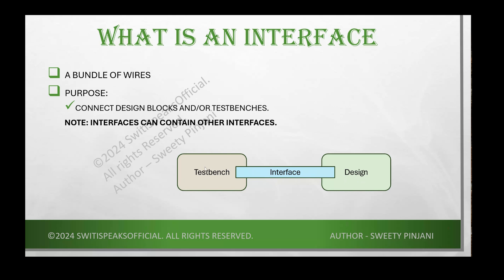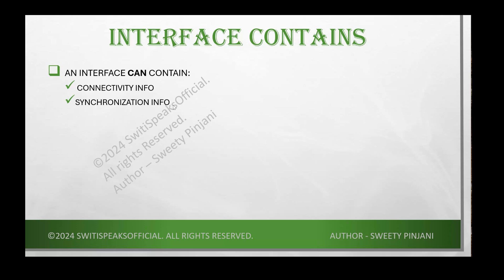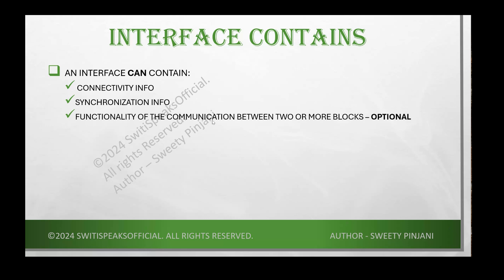You will pass the inputs from the test bench to the design, then read the outputs from the design into your test bench and analyze them. An interface can contain connectivity information, synchronization information — how your signals are getting synchronized with respect to the clock — which means it can also contain clocking blocks. It can also contain the functionality of communication between two or more blocks.